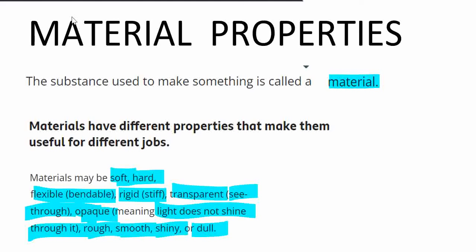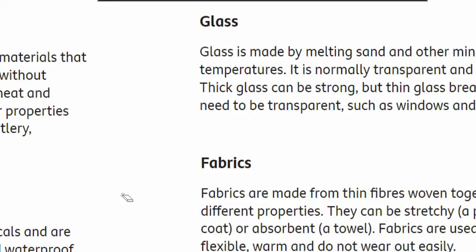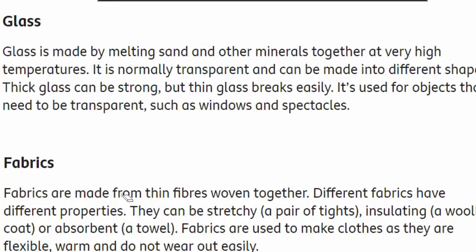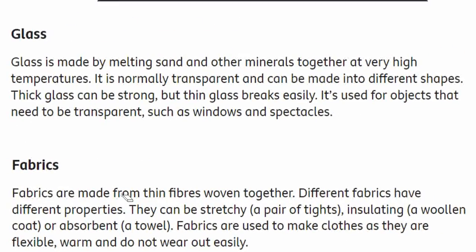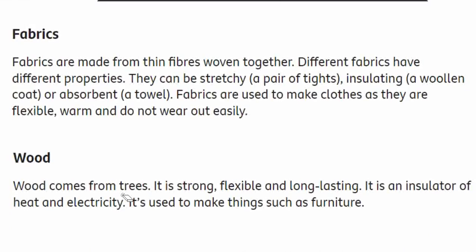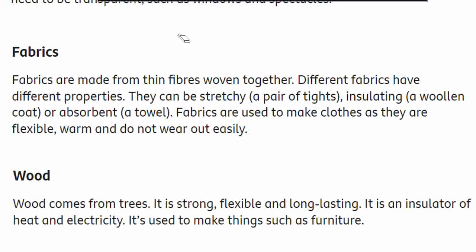Now let's move to the next topic. There are different types of materials: metals, plastics, glass, fabric, and wood. Let's see them one by one.